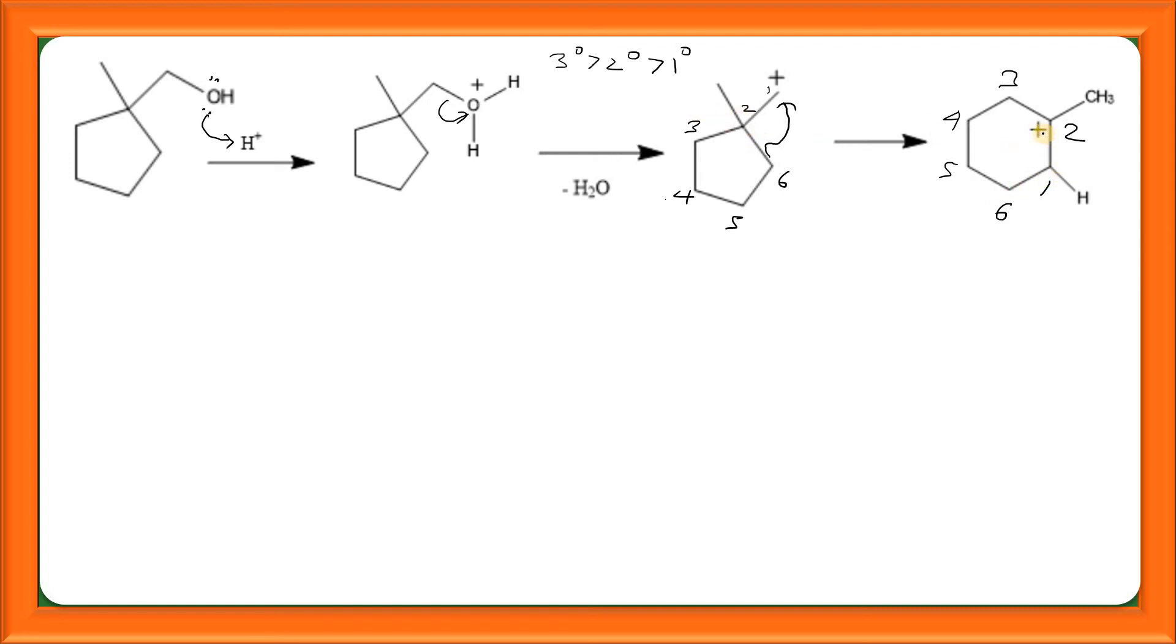Now this second carbon is having positive charge. It is a more stable tertiary carbocation. This first carbon is having hydrogen. As we have added proton here, then at the end proton gets lost. Here, the formation of double bond takes place. That is our X.